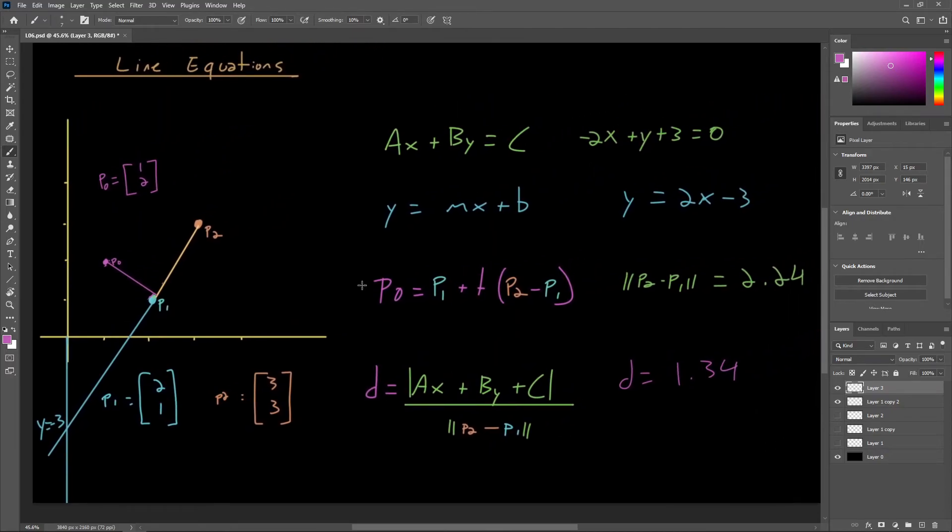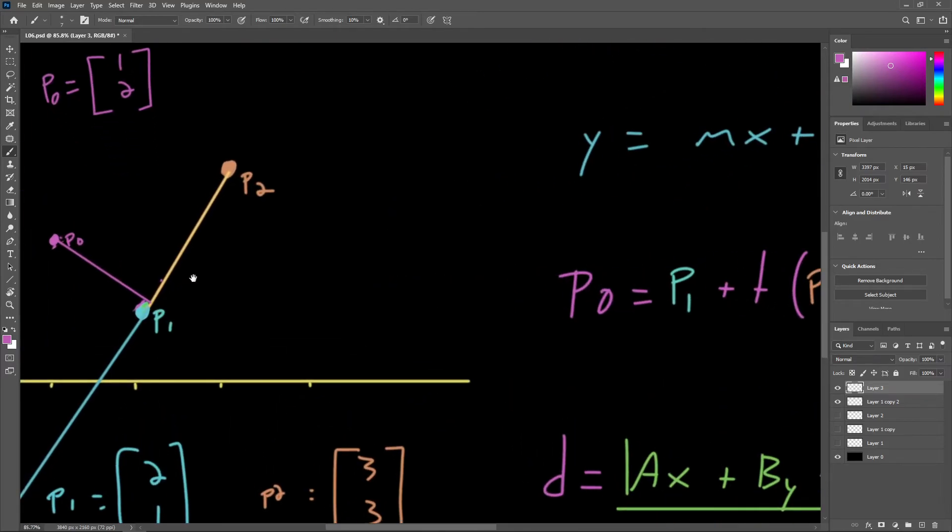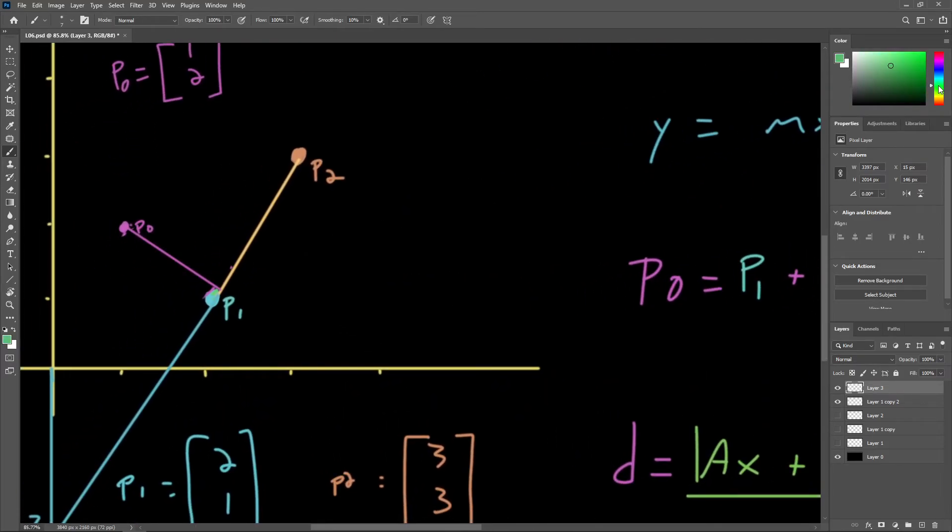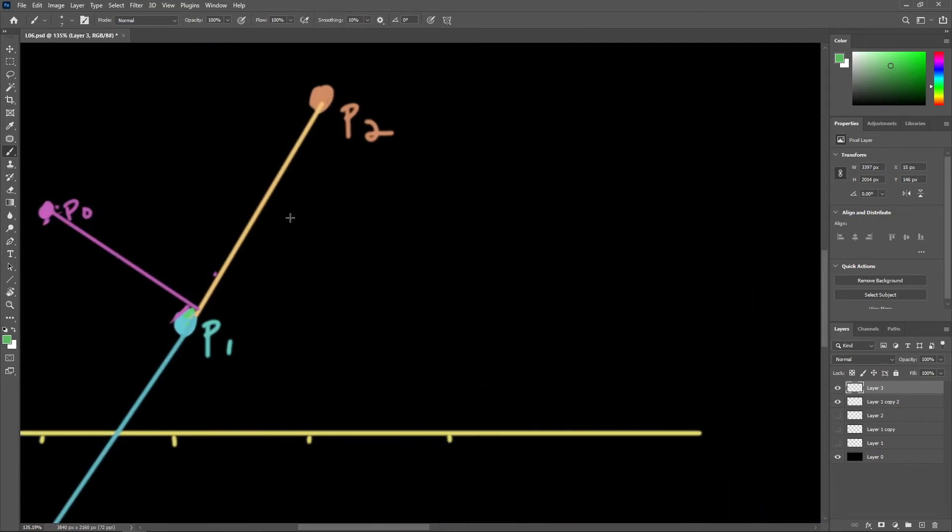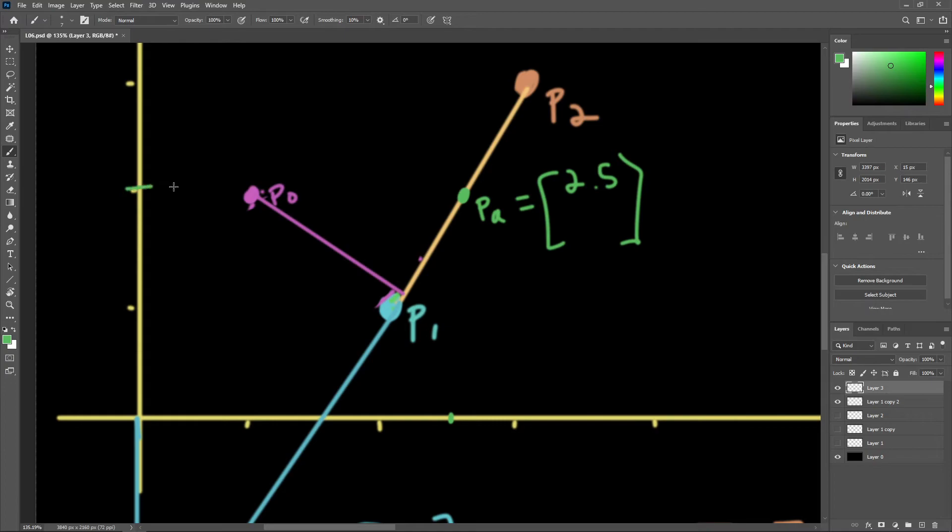Let's do one other thing before we finish off this section. Let's actually use this same distance calculation to test a point that we know is already on the line. The point that we'll test here, let's call it P alpha. This will be the point 2.5, 2.